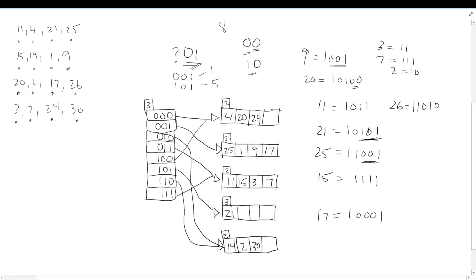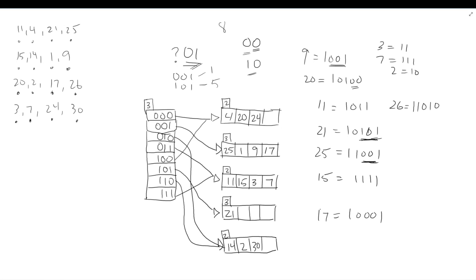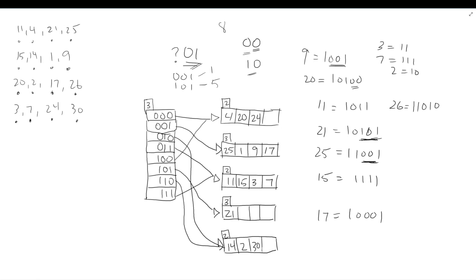That was a good warm-up and practice for working with extendable hashing. If you want more practice, grab some random numbers in the range of 15 to 30, use four entries per bucket, and see what you can do. In the next video I'll take a look at linear hashing, which has many similarities to extendable hashing but a couple of critical differences. Thanks for watching and we'll see you in the next video.